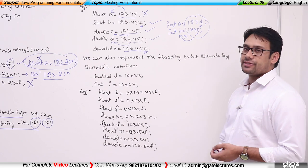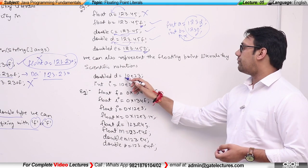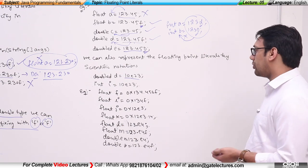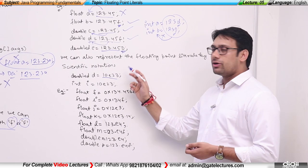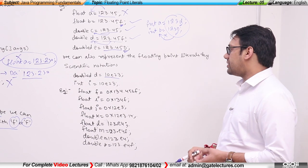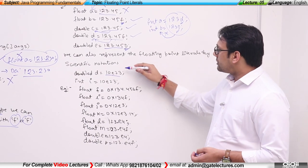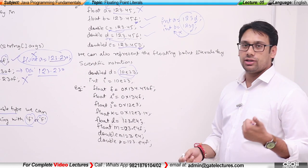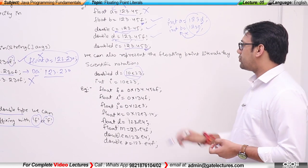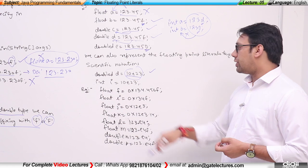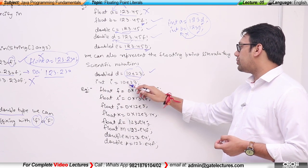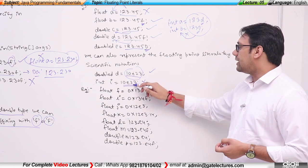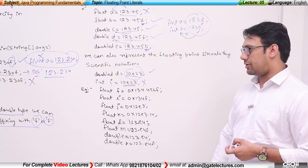We can also represent numbers using scientific notation. For example, I can write 10E23 — this is a scientific notation and you can convert this number into a decimal number. By default, if you write a number with 'E' like this, it is a double number. But if you write int i is equal to 12310E23, this is not correct because that number is a double and this variable is an integer.